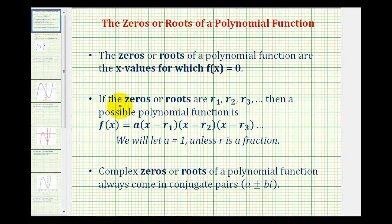So what I mean by that is if the zeros or roots are r sub one, r sub two, and so on, then our polynomial function must contain a factor of x minus r sub one, x minus r sub two, and so on.